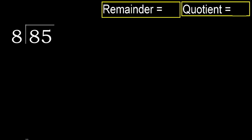85 divided by 8. 8 is not less, therefore work with 8. Here 8 — multiply by which number is nearest to 8 but not greater.